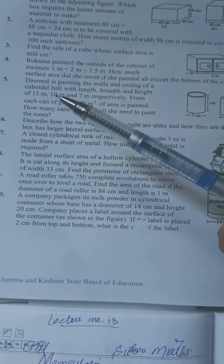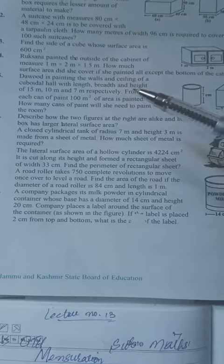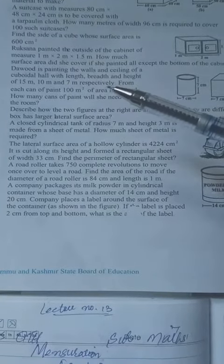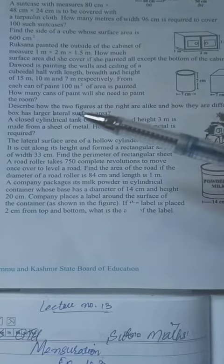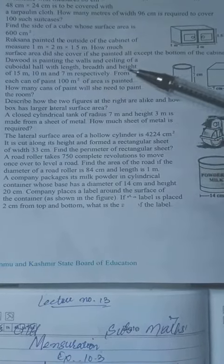Question number 5 says: Daud is painting the walls and ceiling of a cuboidal hall with length, breadth and height of 15 meters, 10 meters and 7 meters respectively.